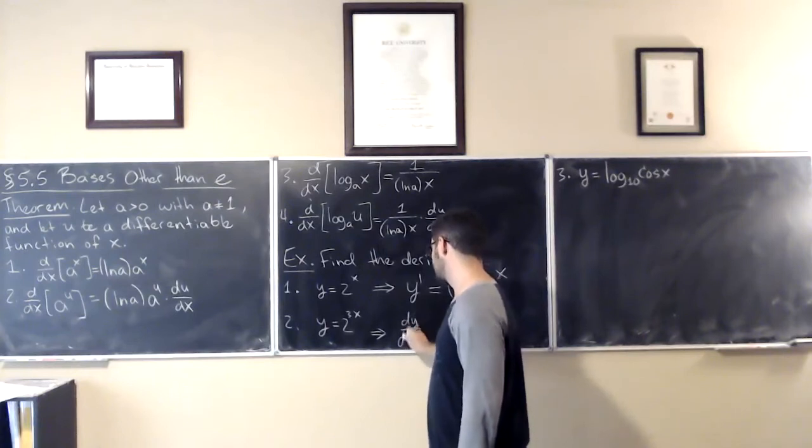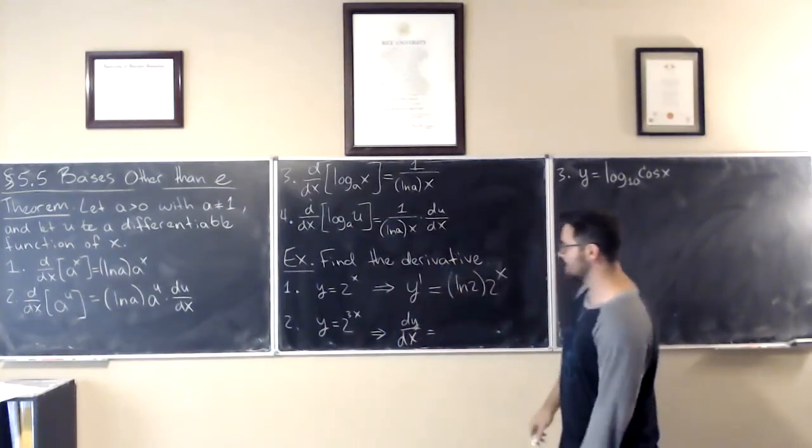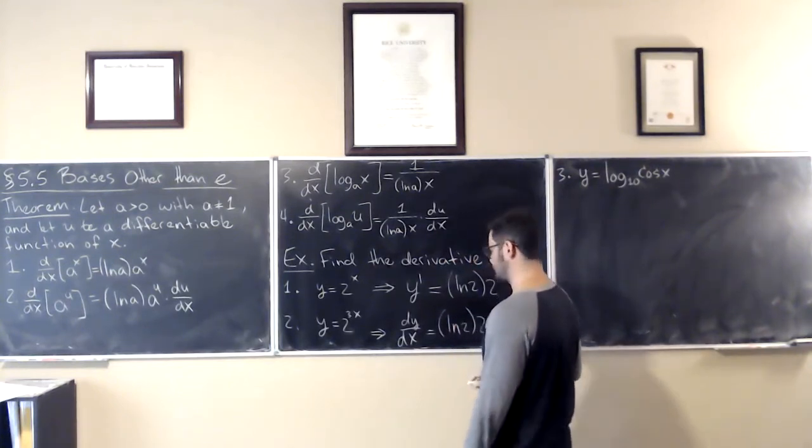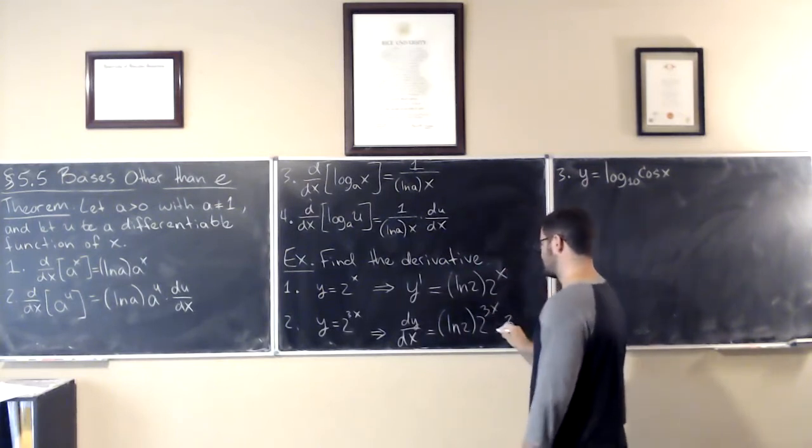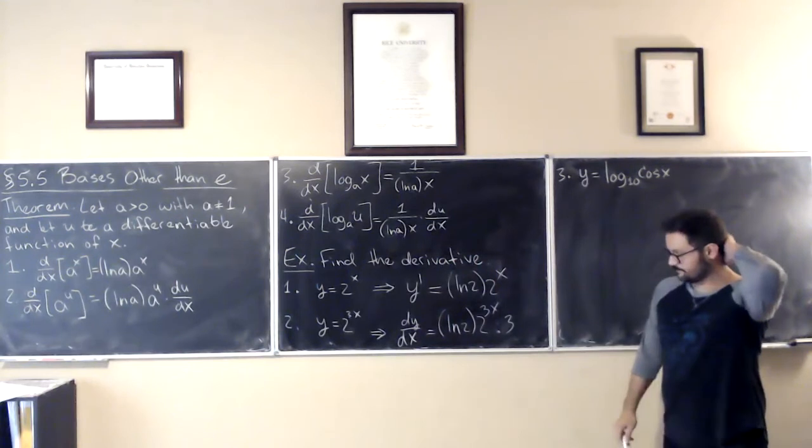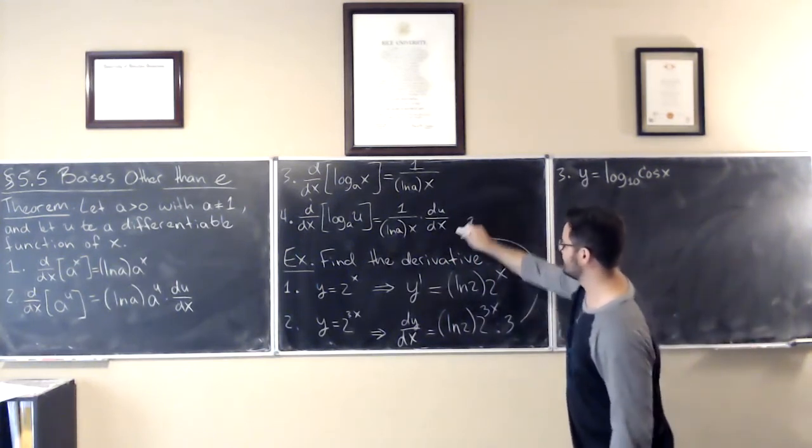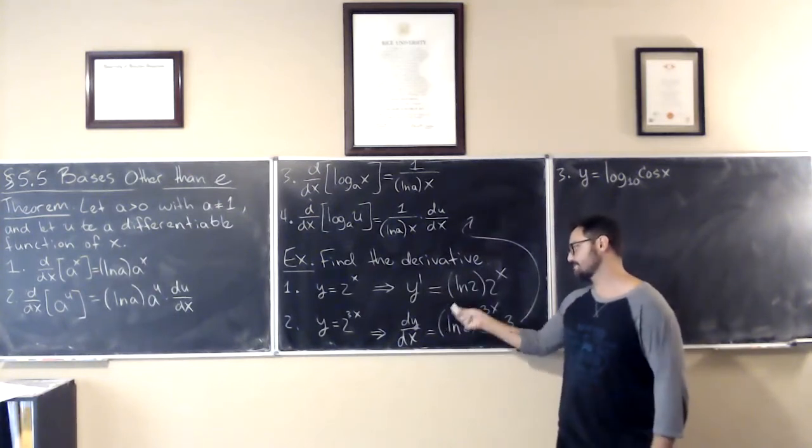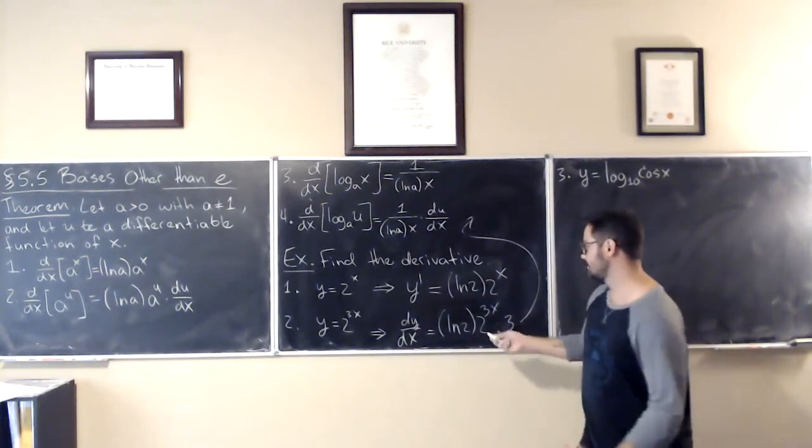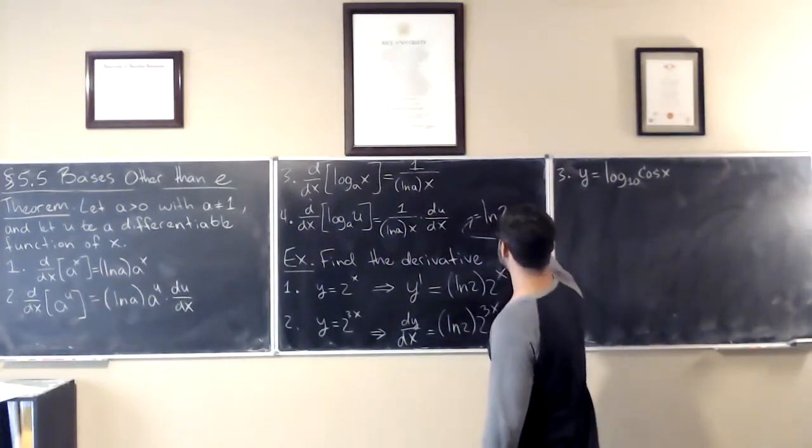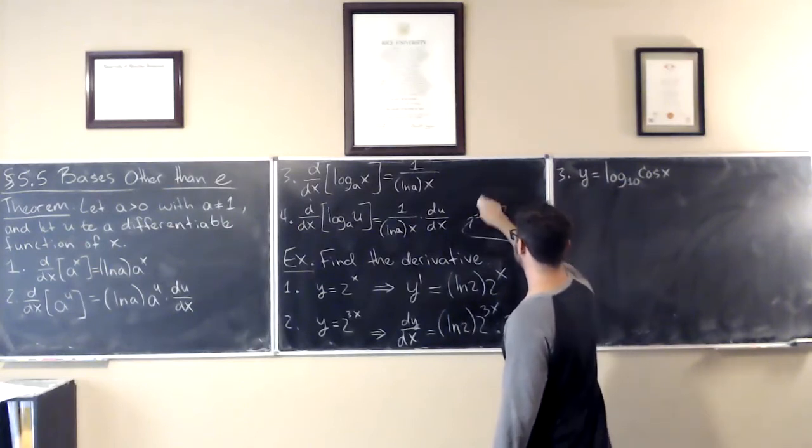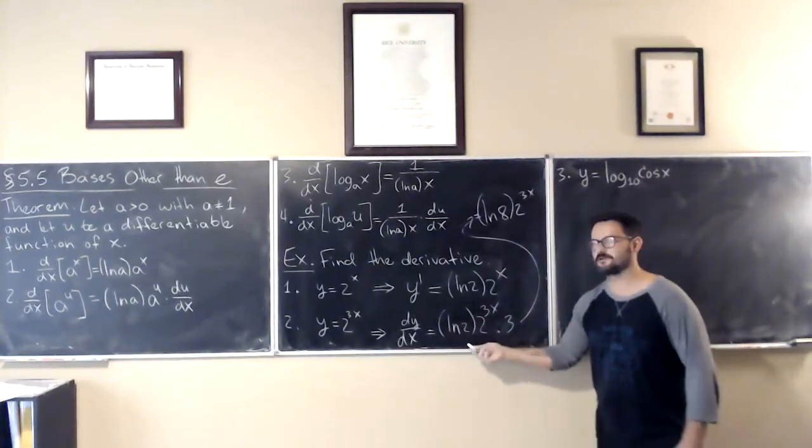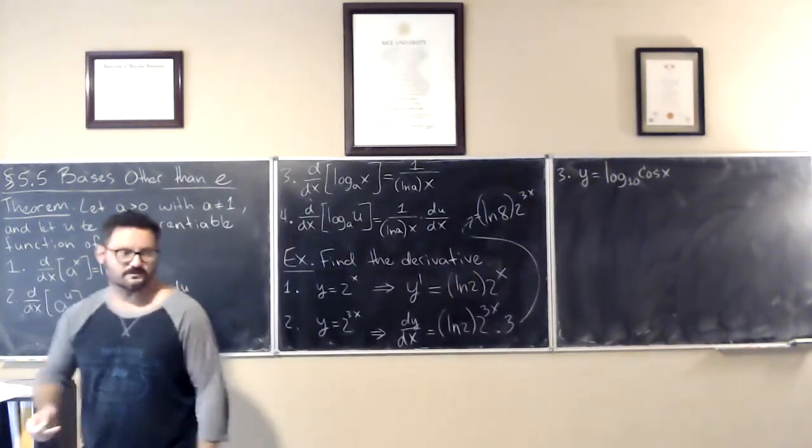Here, using Leibniz notation, dy dx, same thing. It's going to be natural log 2 times 2 to the power of 3x times 3. But in your textbook, I wouldn't be surprised if they wrote this as 3 times natural log of 2. But you bring the exponent up, so it would be 2 to the power of 3, so you might see this written as natural log of 8 times 2 to the power of 3x.